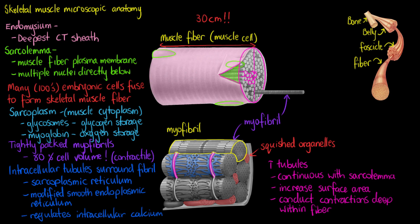Finally, all those lines — squiggly and straight, running horizontally and vertically — visible on the individual myofibril are part of the individual contractile unit of the myofibril called the sarcomere. Sarcomeres run all the way along the myofibrils, with many of them along a single myofibril. We'll talk about what exactly they look like, what they're made of, and how muscles actually contract. I hope this video has been helpful — thanks for watching and I'll see you again soon!